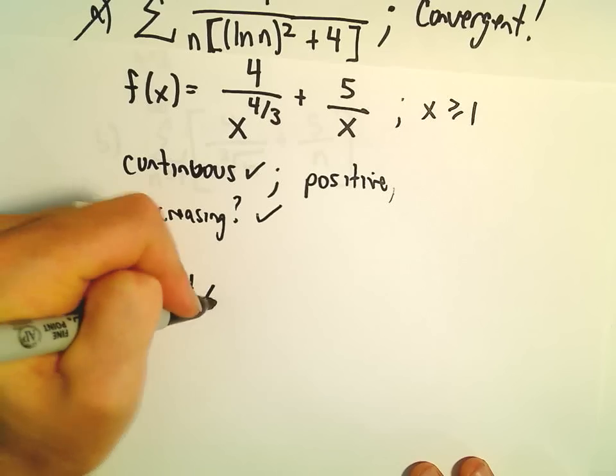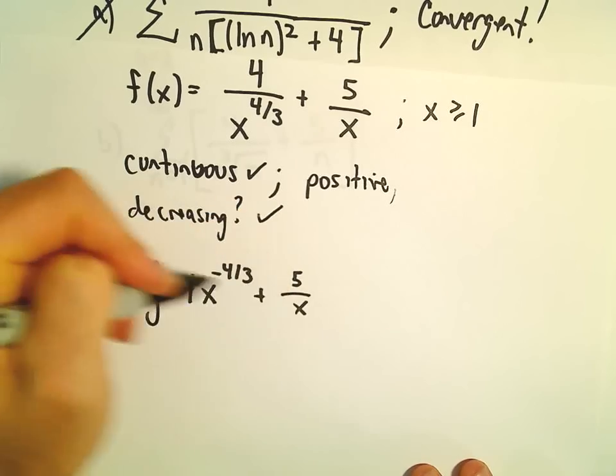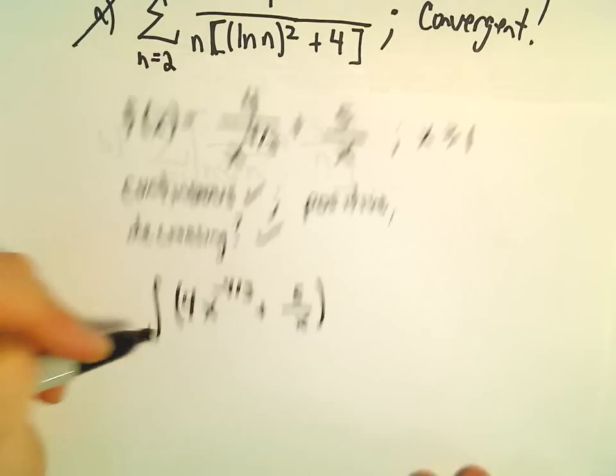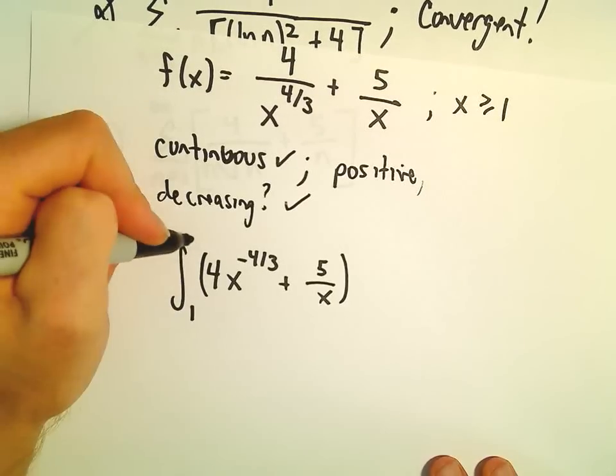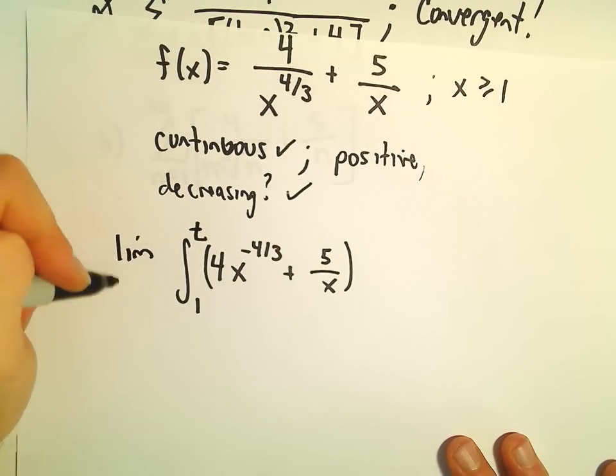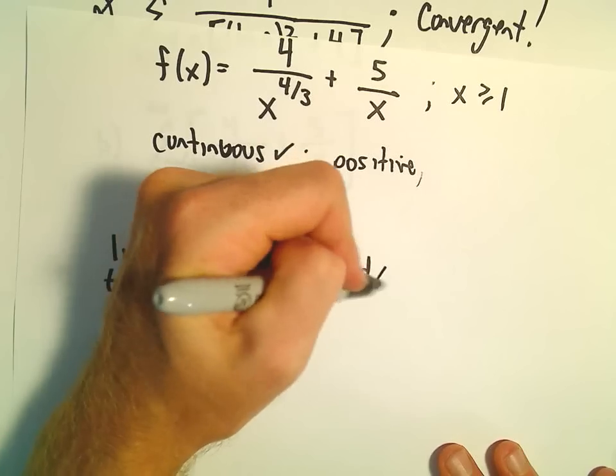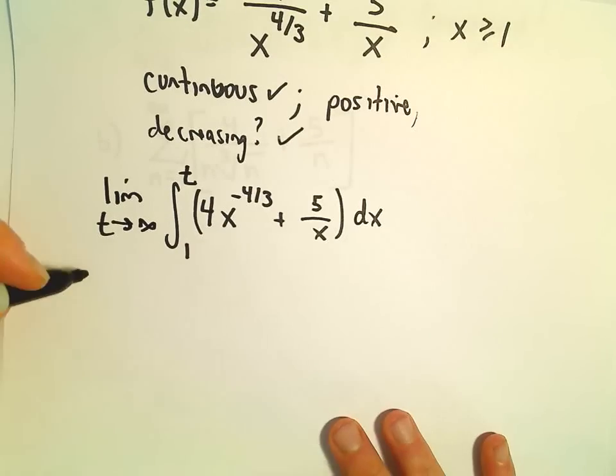So we've got 4x to the negative four-thirds plus 5 over x. Again, this would be from 1 up to infinity, which I'll use, we'll plug in with our t. And then we'll just do the limit as t goes to infinity. All right, so I think we can integrate this one without too much trouble.